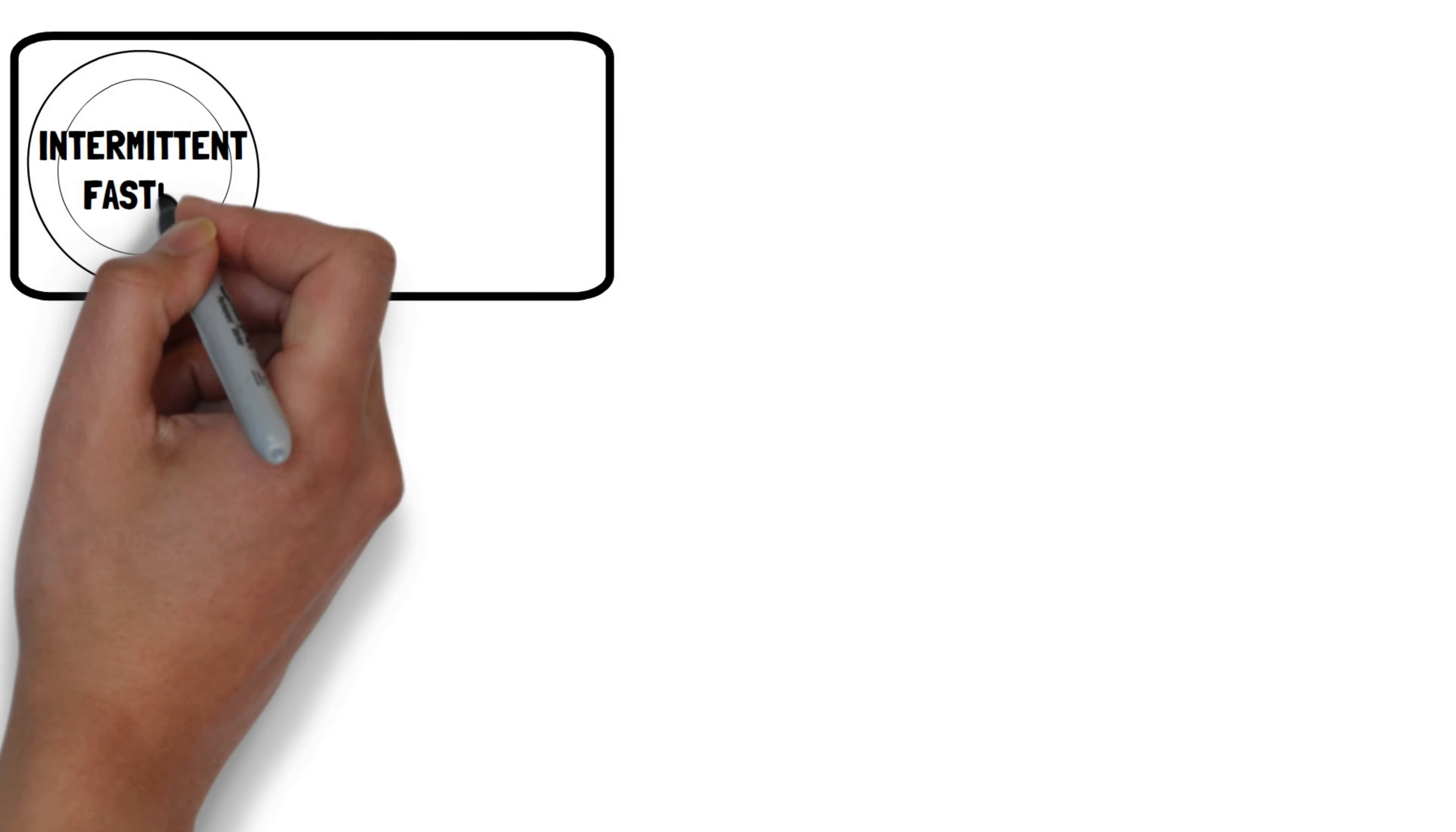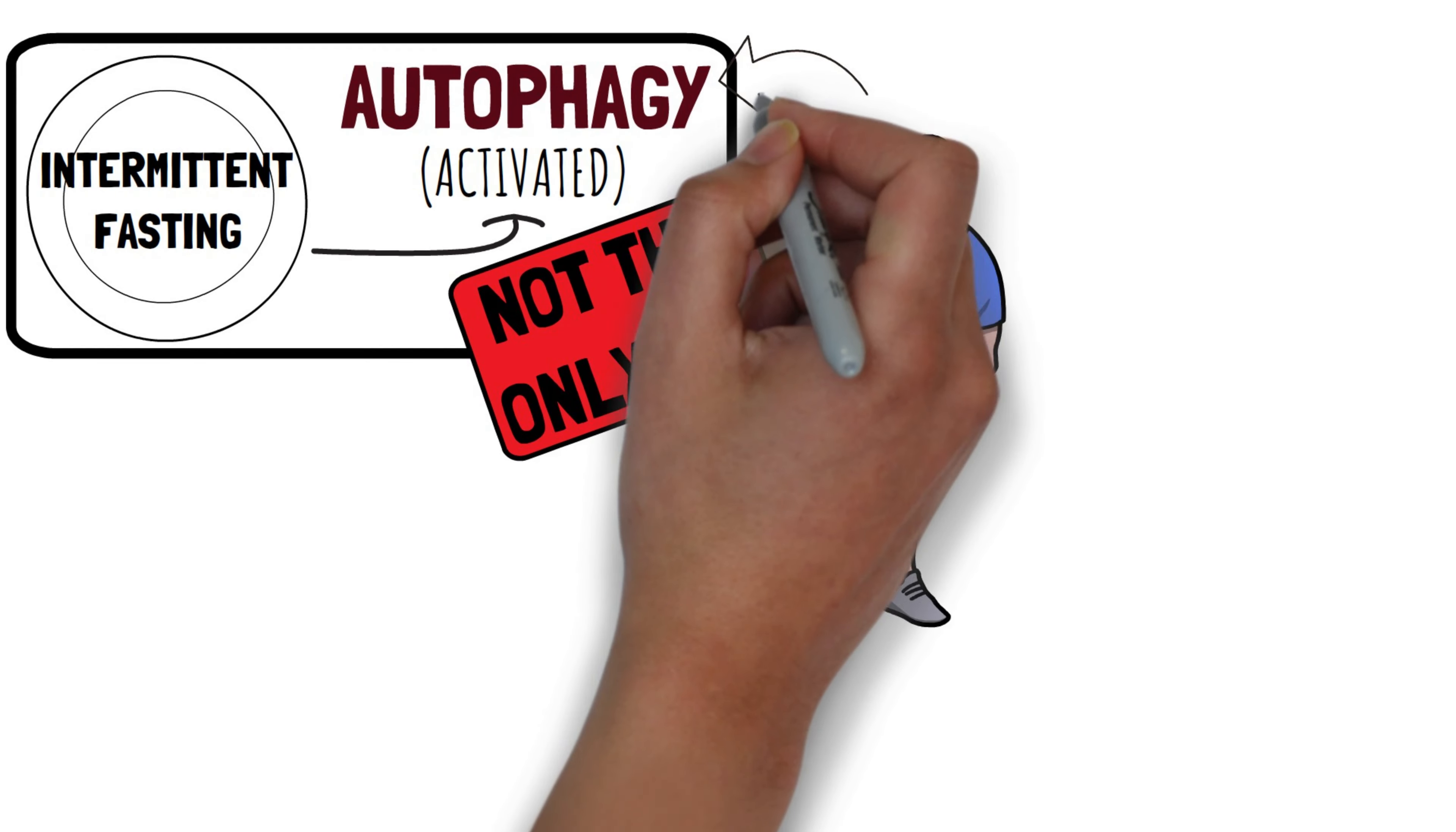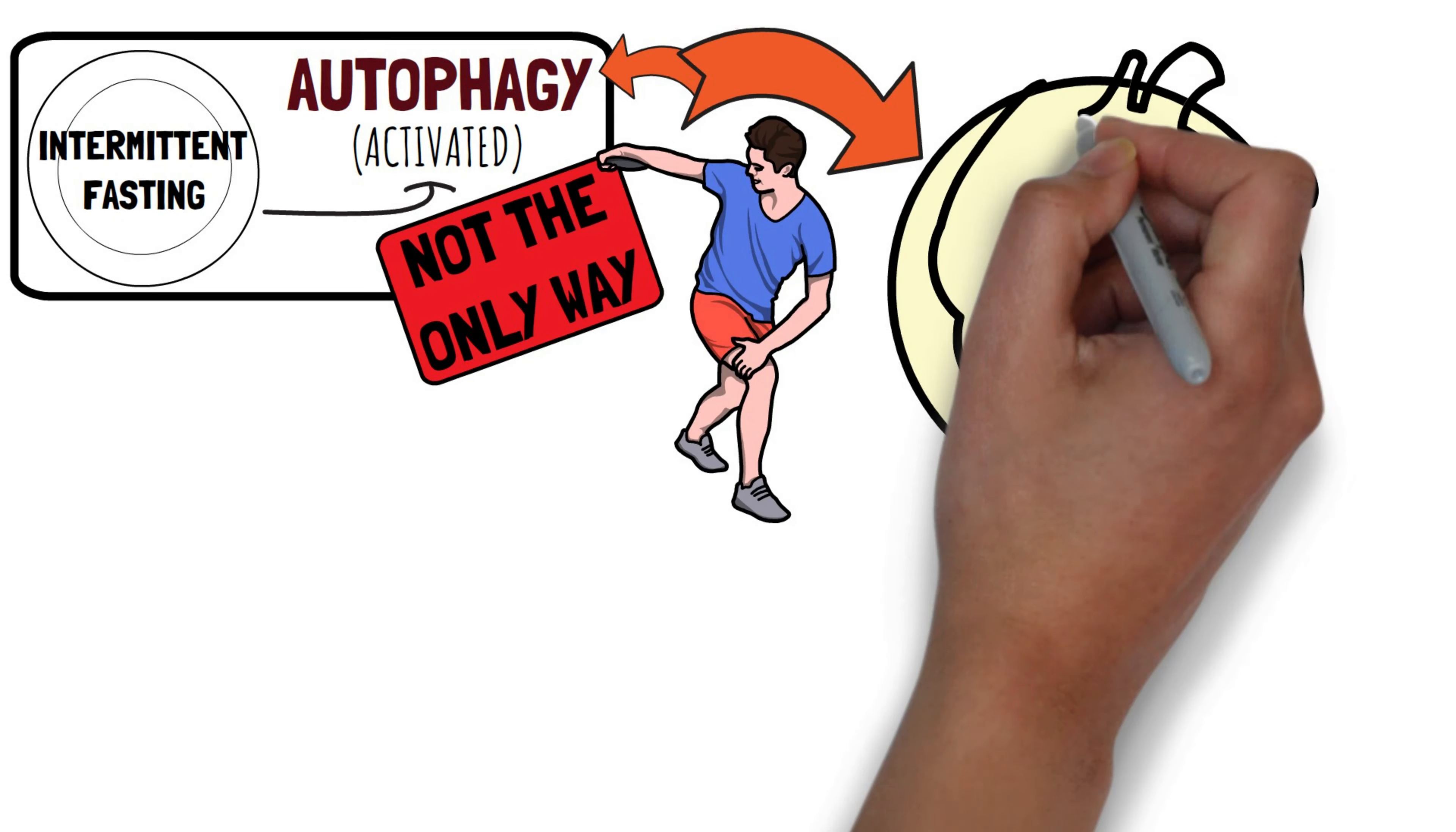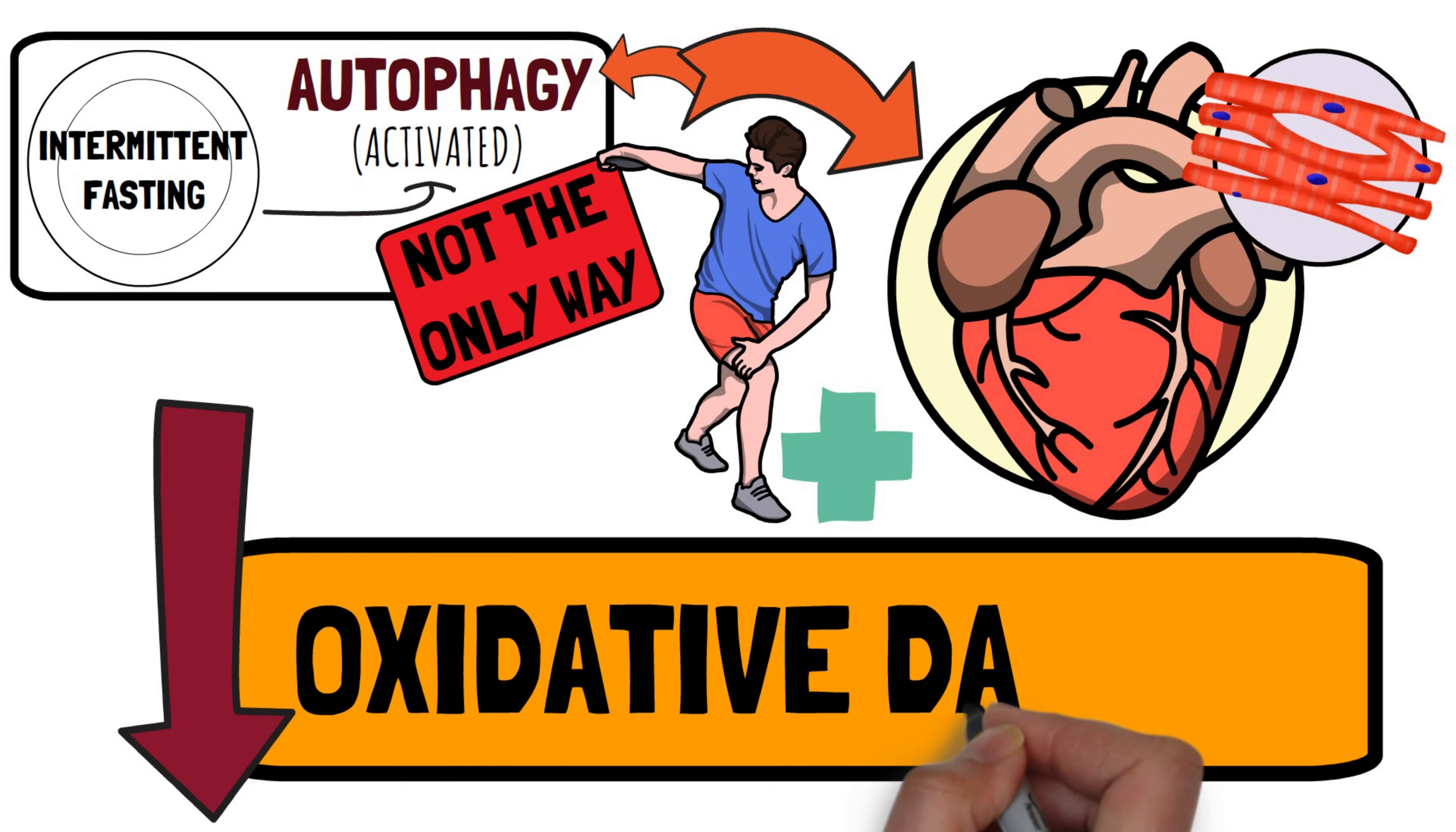However, intermittent fasting is not the only way to enhance cell recycling. Exercise also promotes autophagy, contributing to better overall health. For instance, exercise-induced autophagy delays heart disease progression by improving the quality of heart cells and reducing oxidative damage.